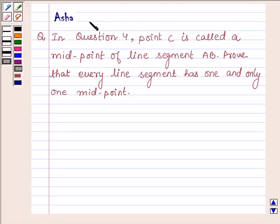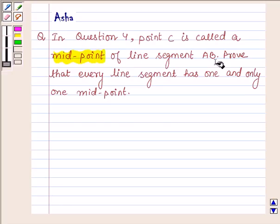Hello and welcome to the session. I am Asha and I'm going to help you with the following question which says: In question 4, point C is called the midpoint of line segment AB. Prove that every line segment has one and only one midpoint.